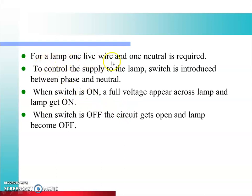To control the supply of the lamp, a switch is introduced between phase and neutral. Agar hum lamp ko directly phase aur neutral se connect karte hain, to woh continuously glow karta hai. Par us circuit mein control laane ke liye — jab hamein chahiye lamp ko on karein, jab hamein chahiye lamp ko off karein — hum uske beech mein switch lagate hain. Jab switch on hoga, poora voltage lamp ke across aayega aur lamp on hoga. Jab switch band ho jaayega, to circuit break ho jaayega aur lamp on nahi hoga.